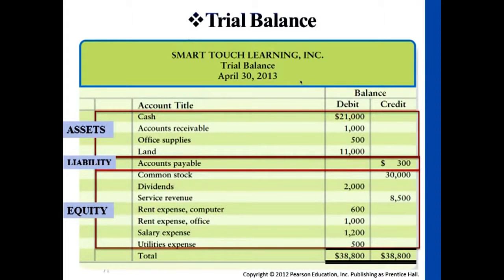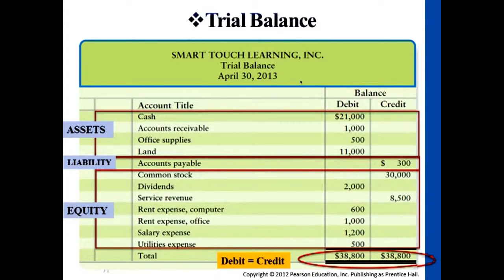Common stock is an equity account — whenever equity increases, it's on the credit side, so common stock appears under the credit column. Dividends and all expenses are exceptions: when incurred, they are posted under the debit side because they reduce stockholders' equity. Revenue, like common stock and retained earnings, has a normal balance on the right side.